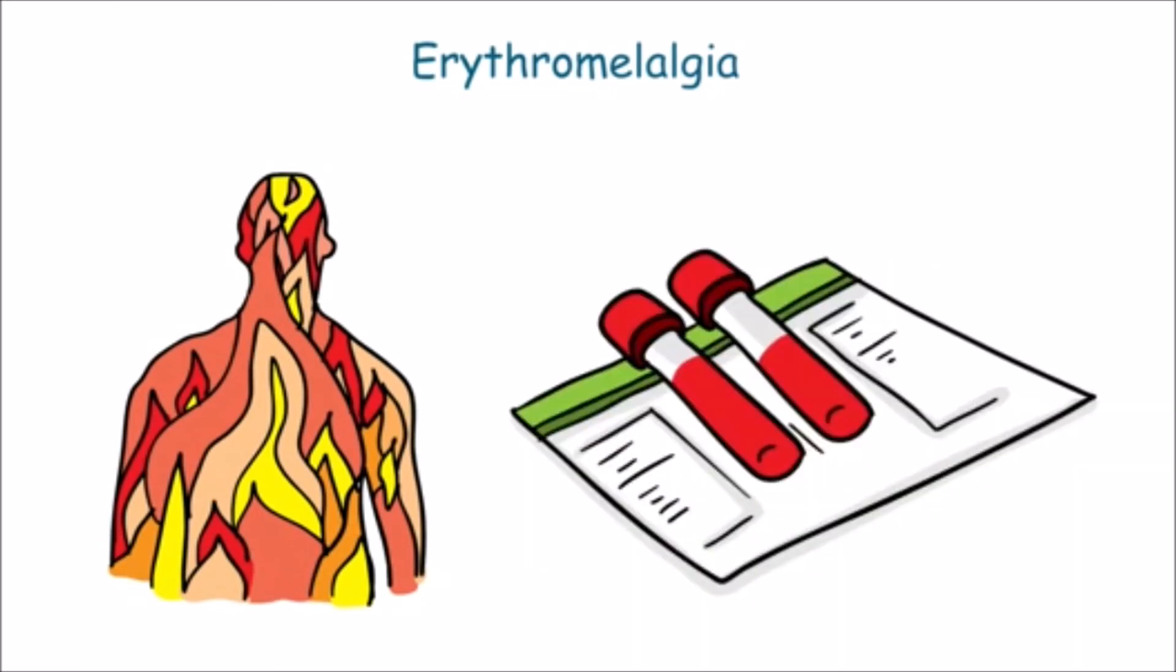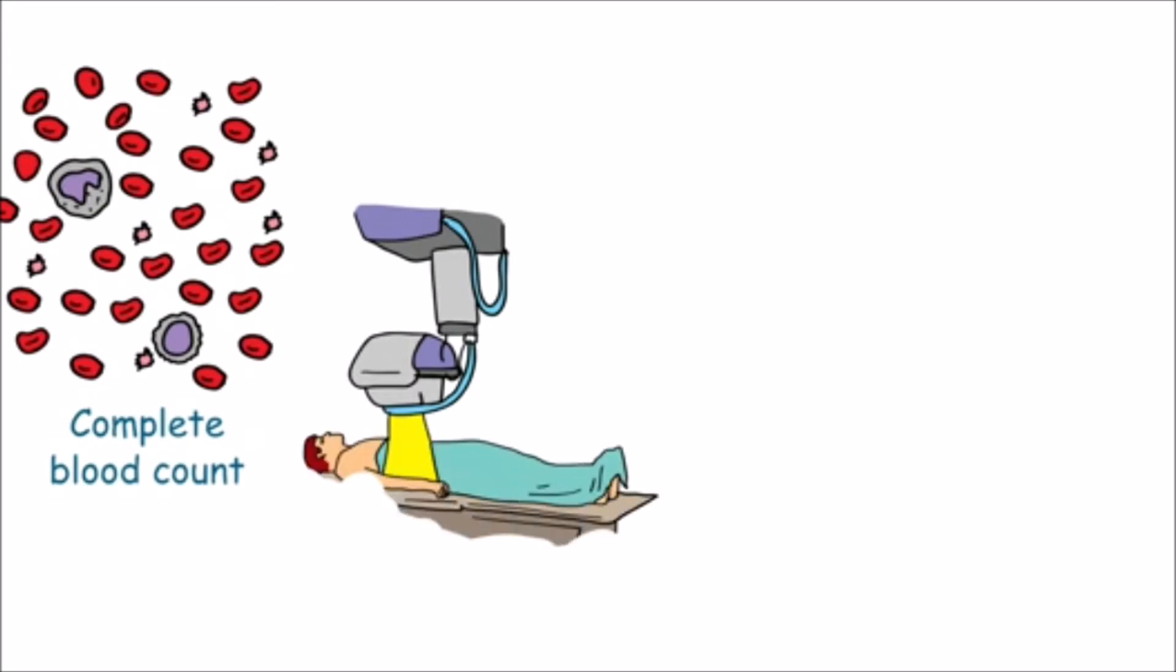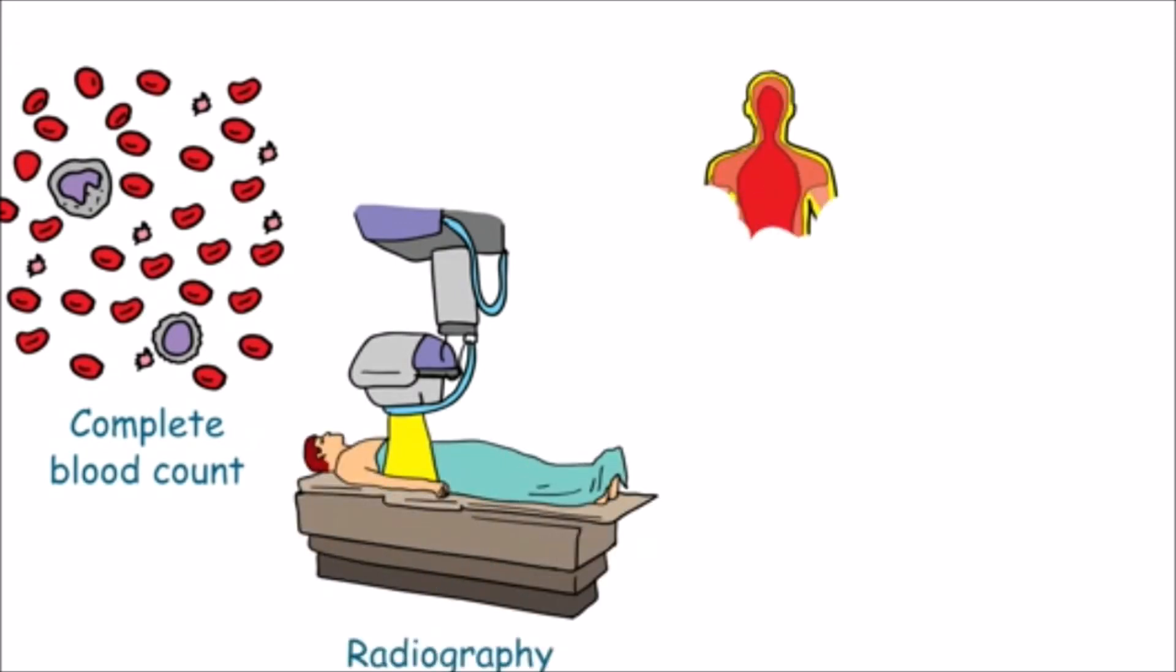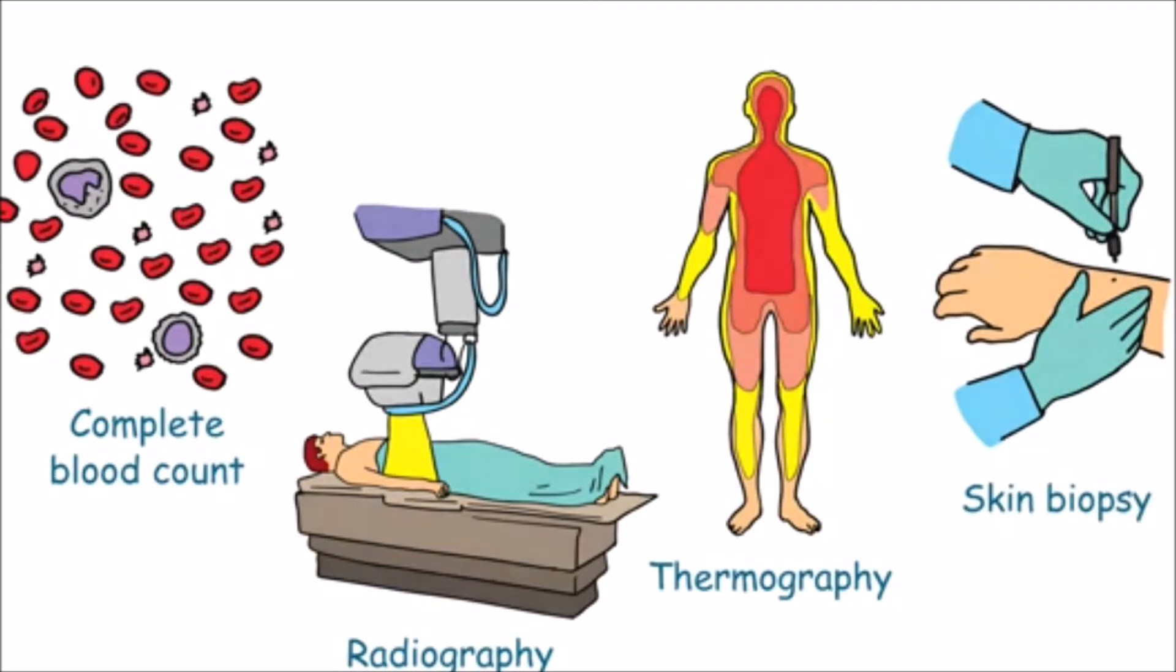Erythromelalgia is diagnosed through clinical examination. Complete blood count with differential is essential to look for evidence of myeloproliferative disorder. Radiography of affected areas is helpful but might not yield specific findings. Thermography and skin biopsy can also be conducted to establish diagnosis.